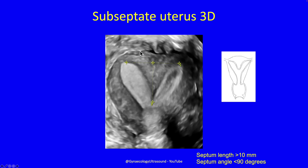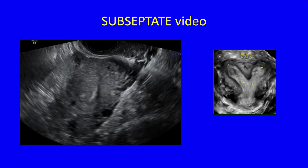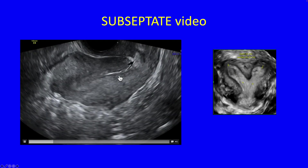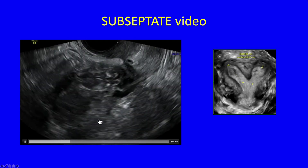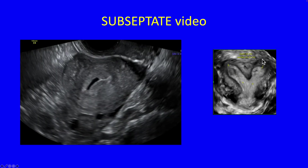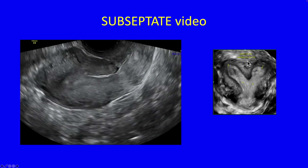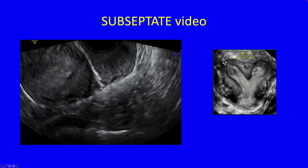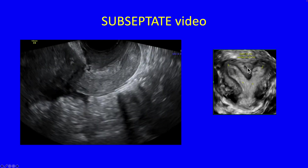In a subseptate uterus you've still got a convex uterine contour, but you've now got a much bigger dip of more than 10 millimetres, measuring from the interstitial portion of the fallopian tubes. This angle is now less than 90 degrees, so it's subseptate. And this must not reach the cervix — it stays in the uterine body. In this video clip you can see the endometrial cavity going down and then re-emerging. On 3D you can see a tiny uterine dip at the fundus — up to 10 millimetres is allowed — so this is essentially still convex, and the septum does not reach the cervix.